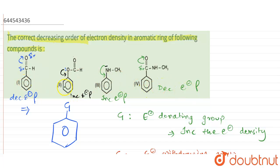So in compounds one and four, the electron density is decreasing, whereas in compounds two and three the electron density is increasing. Since the question asks for the correct decreasing order, the compound with maximum electron density should be written first, going down to the least.